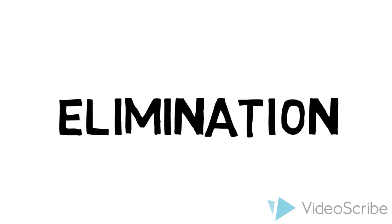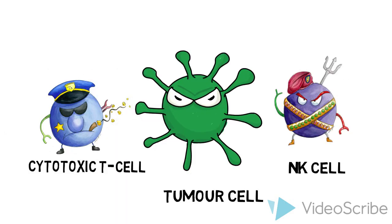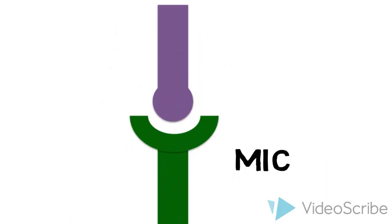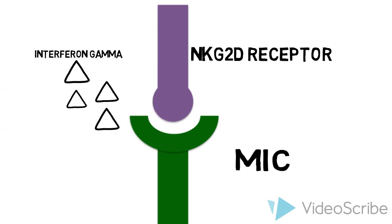In the Elimination phase, the innate and adaptive immune systems work together to destroy developing tumors. Tumor cells overexpress MHC class 1 chain-related molecules. These molecules bind to NKG2D receptors on NK cells, which causes the release of interferon gamma, attracting other cells and amplifying the immune response.